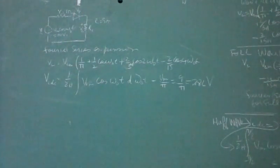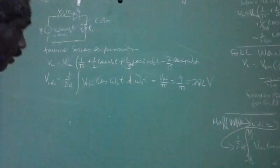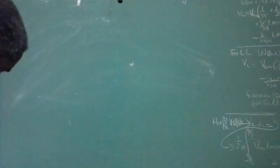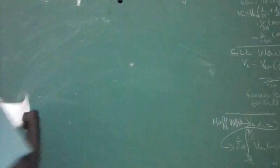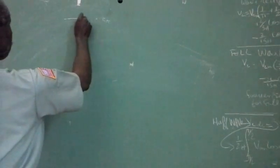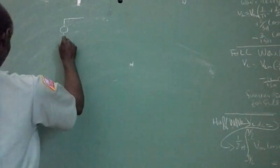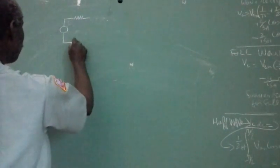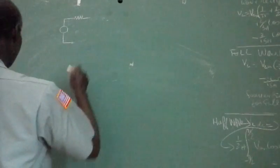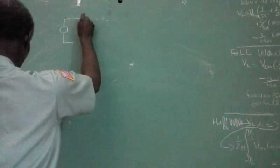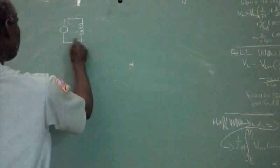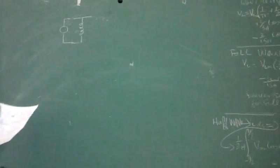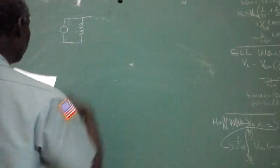Let's move on now to the full-wave rectifier. The full-wave rectifier is more efficient in producing the DC voltage than the half-wave rectifier, and it produces Fourier series values at twice the frequency of the half-wave rectifier.